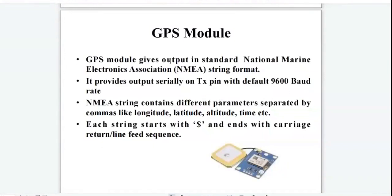Now let us see the GPS module. The GPS module gives output in the standard National Marine Electronics Association (NMEA) string format. It provides output serially on the transmit pin with a default baud rate of 9600. An NMEA string contains different parameters such as Longitude, Latitude, Altitude, and Time. Each string starts with the dollar symbol.